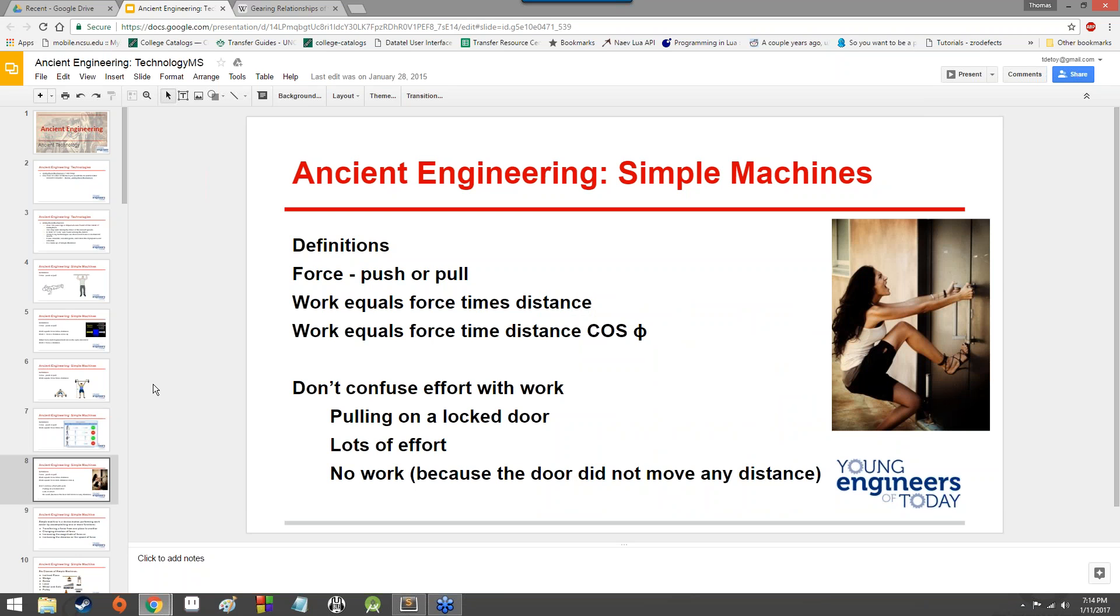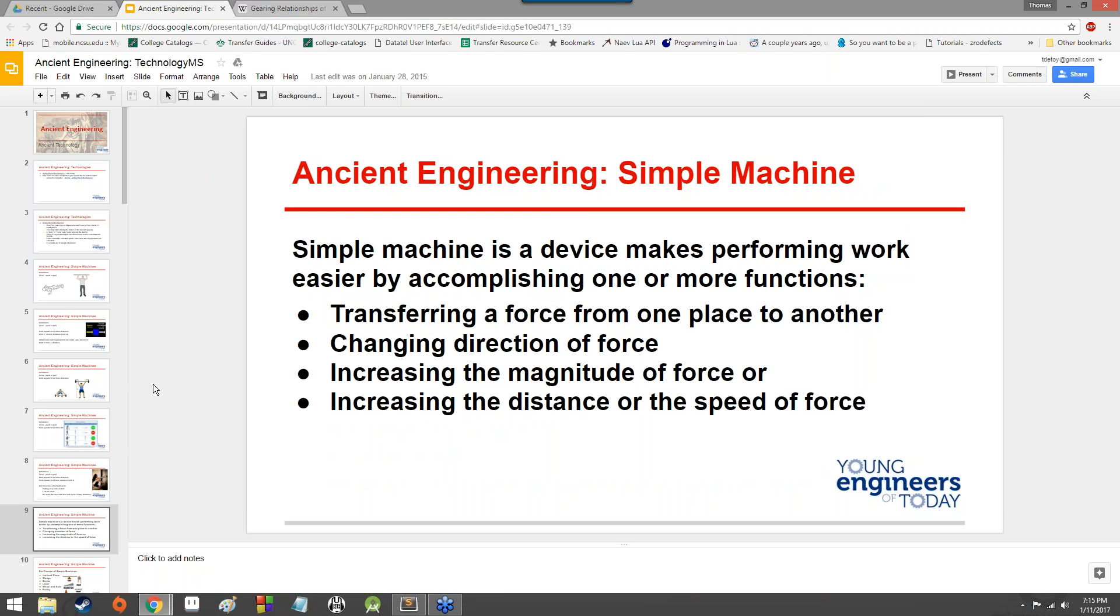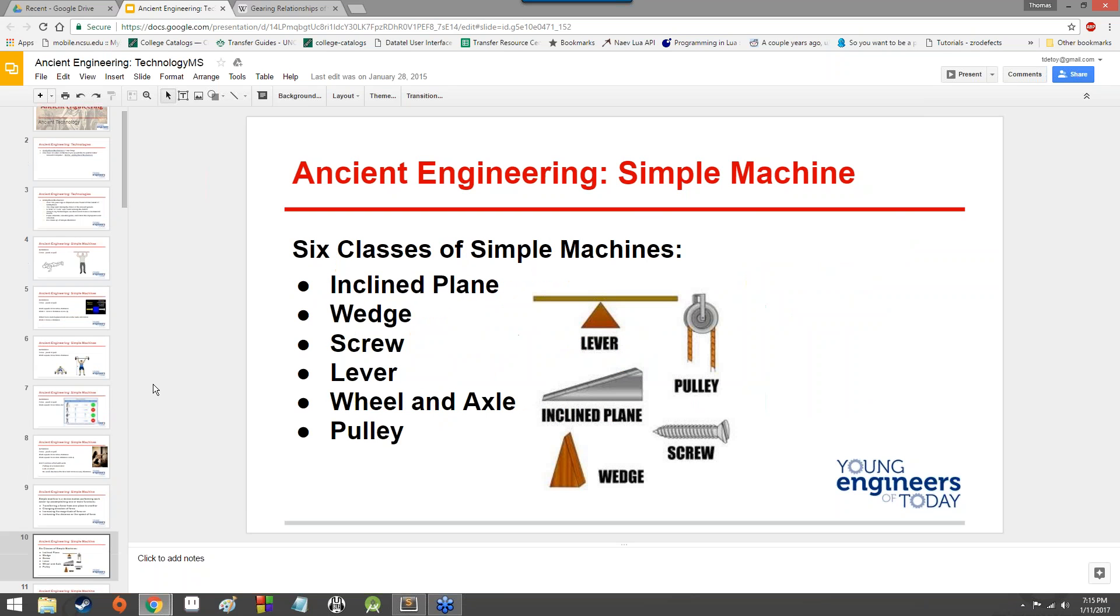When force and displacement are in the same direction, then work equals force times distance. So if you're pushing something or pulling something in a direction, then work can just be force times distance. But if you're pushing something and as a result the object is moving in a different direction, like if you're using a pulley or something like that, then you need to account for that. Don't confuse effort with work. Pulling on a locked door is going to be lots of effort, but there's going to be no work because the door did not move. So you expended energy, you used force, but because the door did not move, there was no work actually being done.